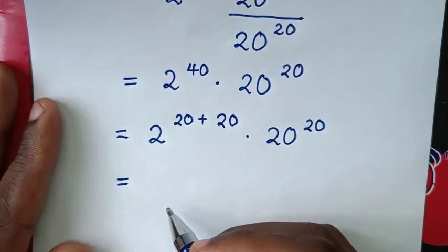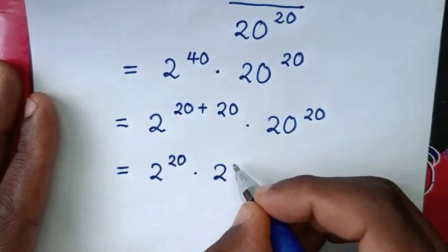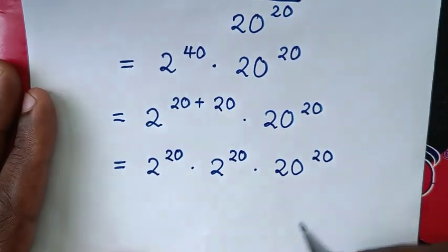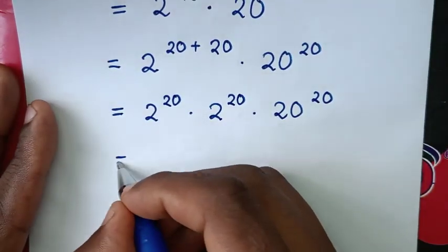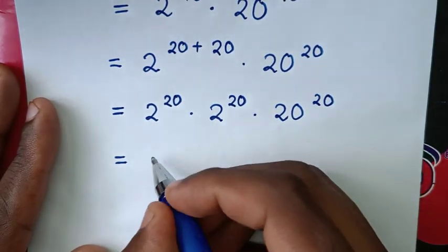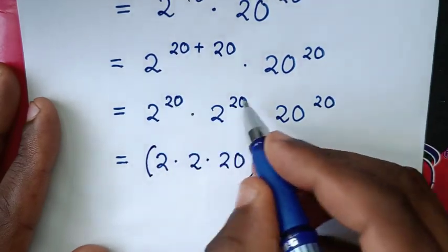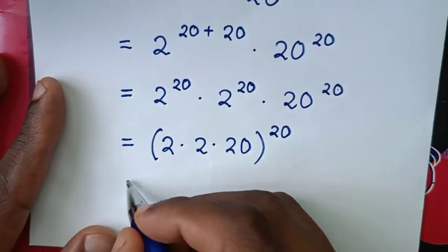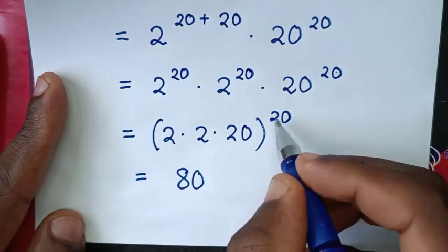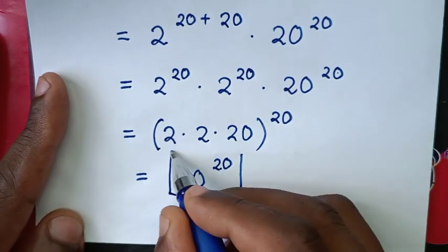Using the exponent addition rule, 2 power of (20 plus 20) becomes 2 power of 20 times 2 power of 20. Combined with 20 power of 20, we have three terms with the same power of 20. Multiplying the bases: 2 times 2 times 20 equals 4 times 20 equals 80. So the result is 80 power of 20. Therefore, 80 power of 20 is our final answer.